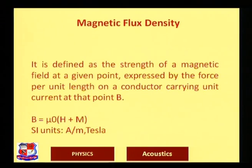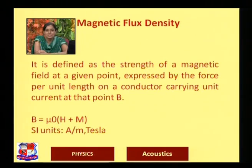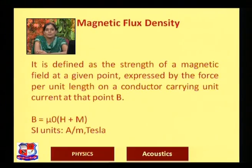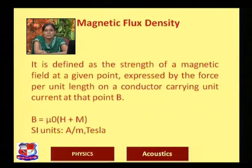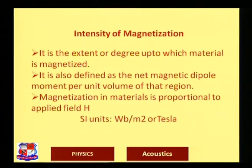Magnetic flux density B is defined as the strength of the magnetic field at a particular point, expressed as force per unit length. B = μ₀H, and when magnetization is present, B = μ₀(H + M). The unit is Tesla (MKS) or Gauss (CGS). One Tesla equals 10⁴ Gauss.